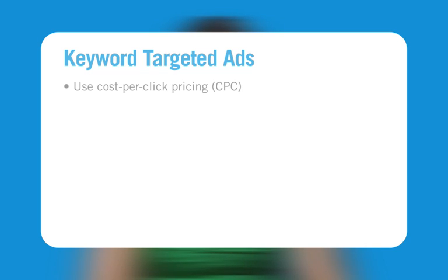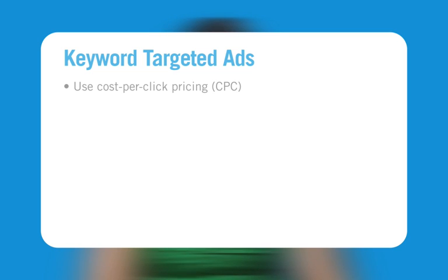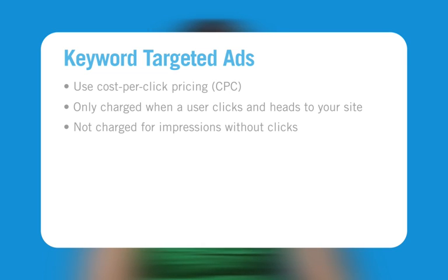How you are charged depends on the type of campaign you create. First, let's look at the pricing system for campaigns that target keywords. AdWords charges for keyword targeted ads using cost per click pricing. Cost per click, or CPC, means your AdWords account is only charged when a user clicks on your ad and is taken to your website. You are not charged when your ad appears and does not receive a click.